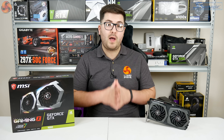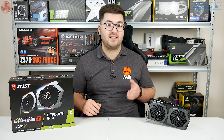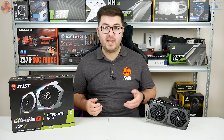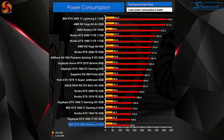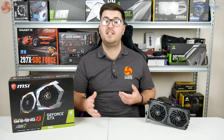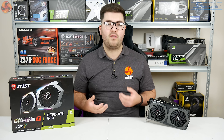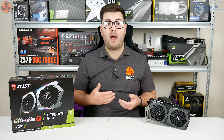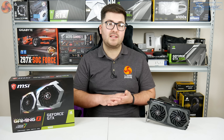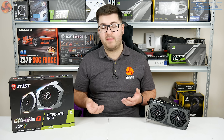As for power draw, despite both the 1660 and 1660 Ti sharing the same 120W TDP, we saw slightly lower power draw for the 1660 with the total system pulling 162 watts. This makes it between 7 and 17 watts less than other GTX 1660 Ti cards we've reviewed, depending on how heavily factory-overclocked those cards are. Disabling that one TPC has made a small but measurable difference to total power consumption.